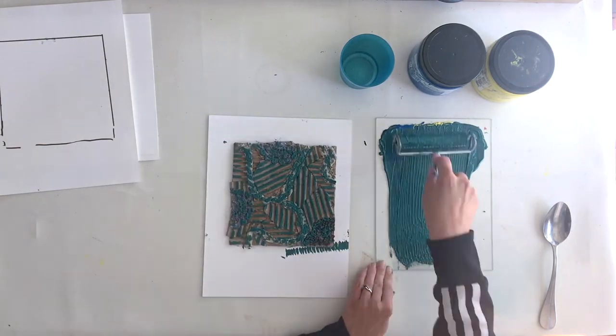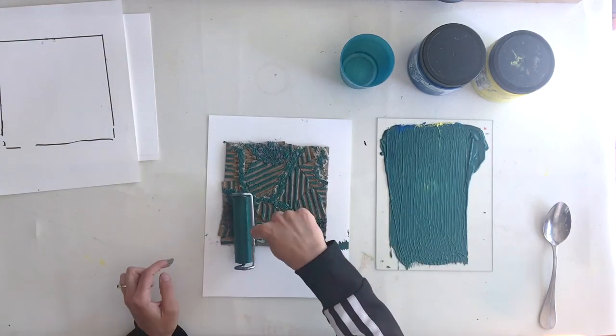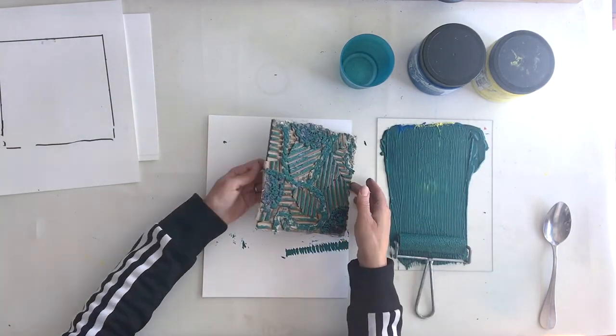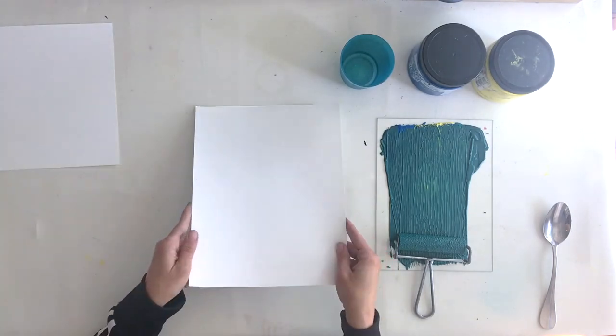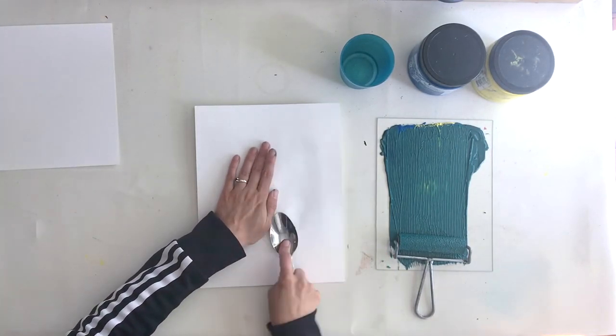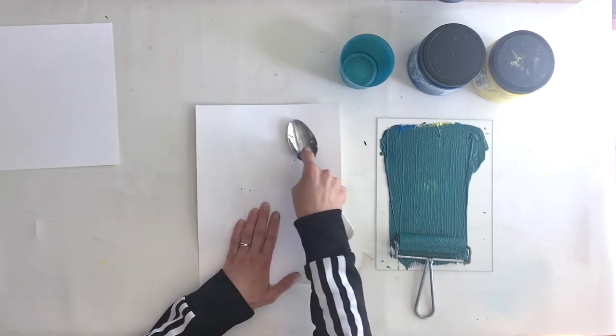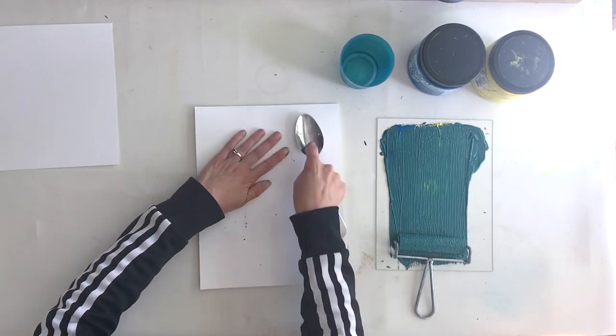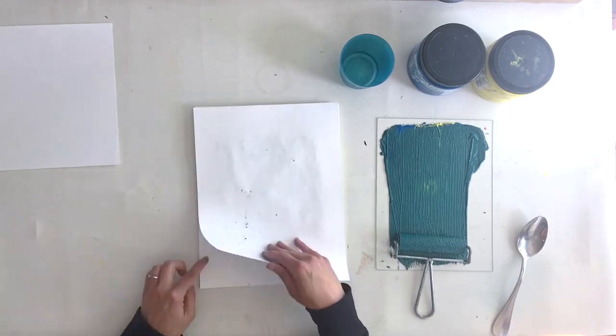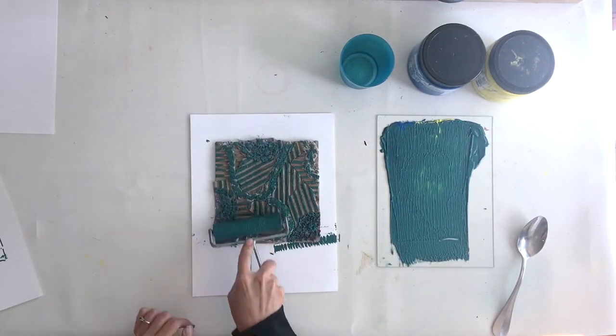And now I'll repeat these steps over and over: ink, burnish, and repeat until I've pulled as many prints as I want. You may not be able to use your block again, depending on how the Mod Podge layer held up and what different elements you've included in your piece. But if you're really careful, you may be able to use your block over and over as well.